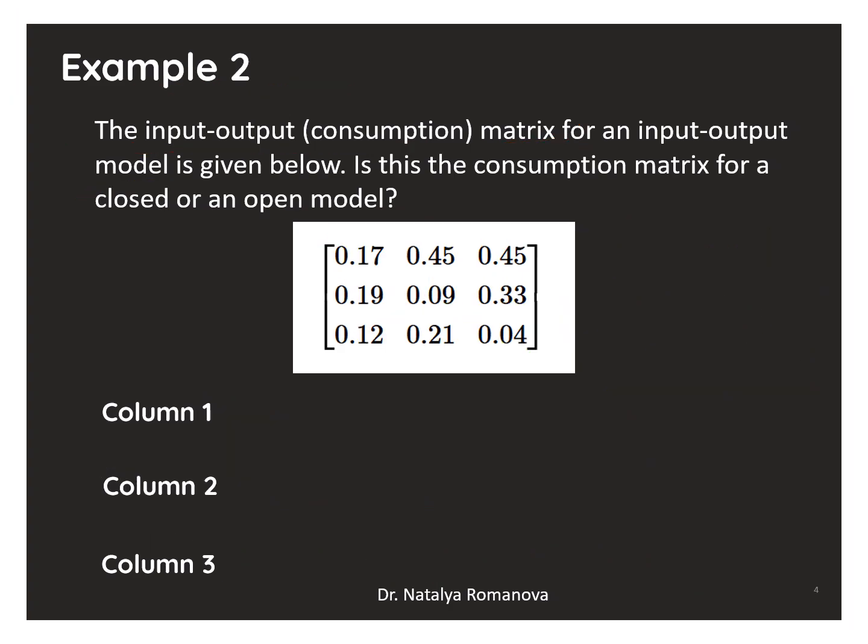The second example. We need to check column sums. Column 1, sum of this column equals 0.17 plus 0.19 plus 0.12 equals 0.48.